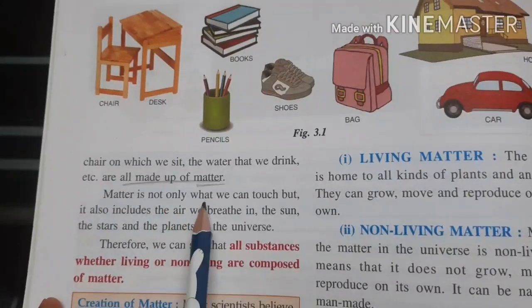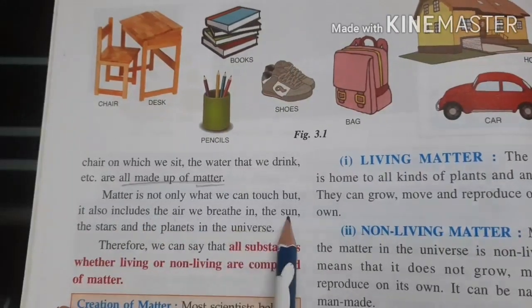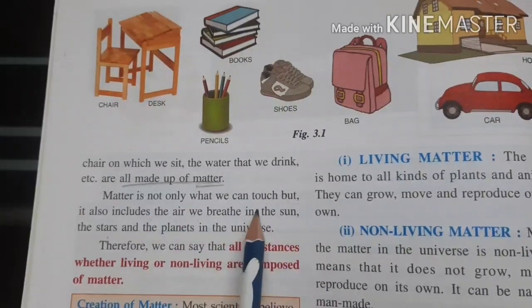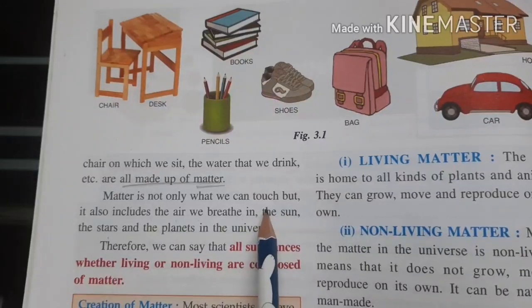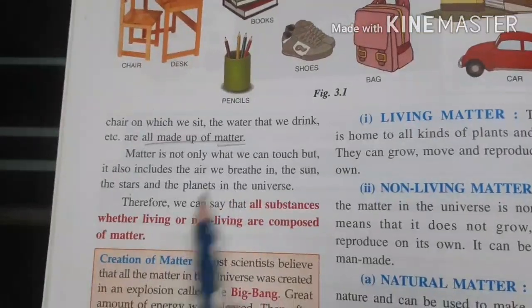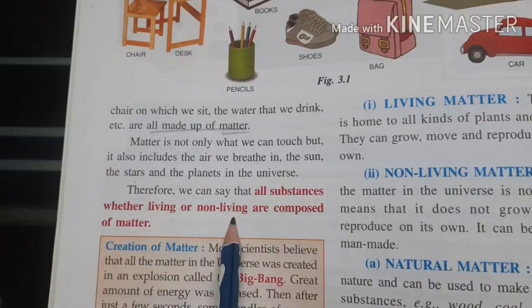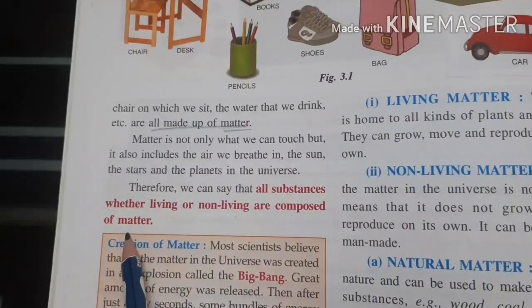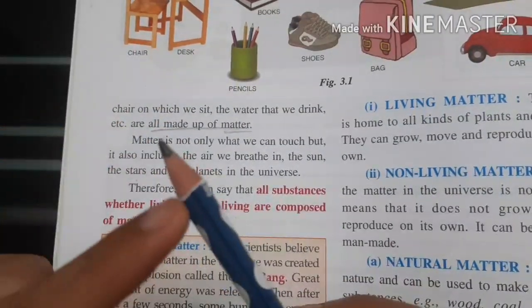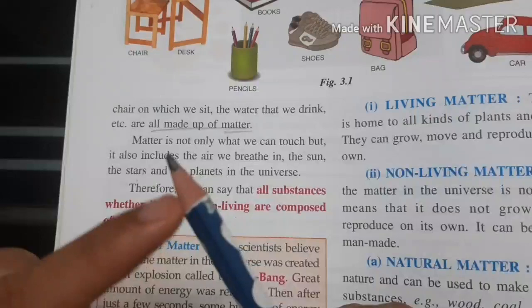Matter is not only what we can touch, but it also includes the air we breathe, the sun, the stars, and the planets in the universe — every single thing. As I told you, we can touch, we can see, we can feel — all those things are matter. Therefore, all substances, whether living or non-living, are composed of matter. This pencil is made up of lead and wood, and both the wood and lead are known as matter.